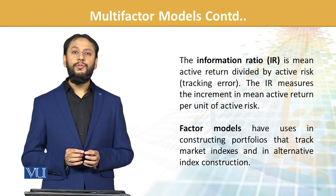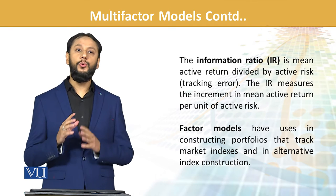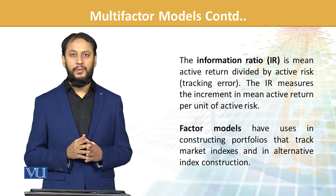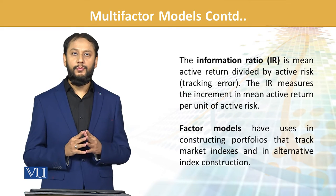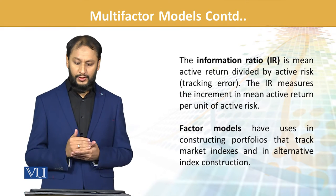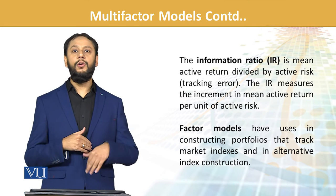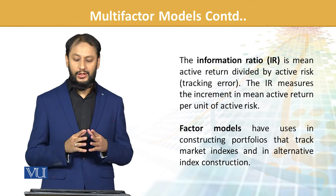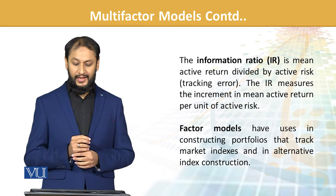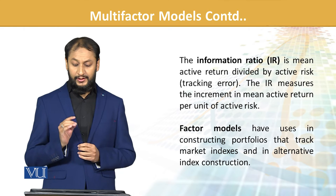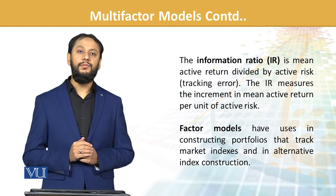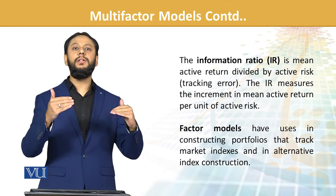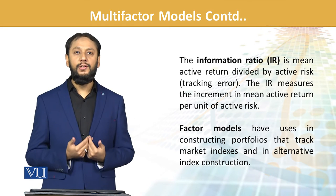Information ratio: yeh ek word hai jo finance mein do teen jagah istemaal hota hai aur different meanings aur different formulas ke saath. Humein dekhna hota hai ke yeh kis context mein baat ho rahi hai. Ab is waqt hum multifactor model padh rahe hain aur portfolio ki risk ka variation kar rahe hain, to information ratio yahan jo aayegi iski apni definition hogi. Is context mein information ratio means active return divided by active risk, yani tracking error. The IR measures the increment of active return per unit of active risk — kitna active risk liya aur kitna additional return mila.